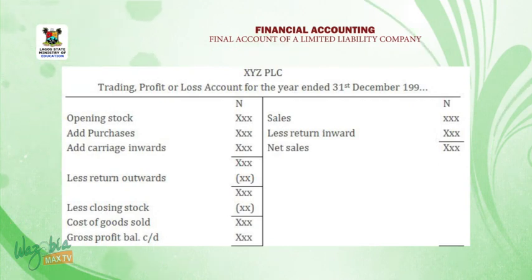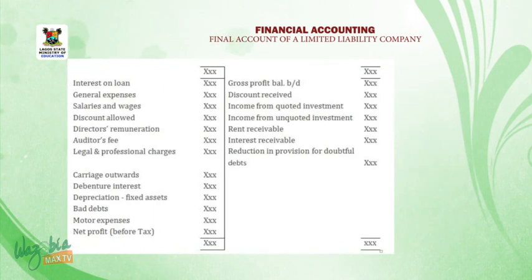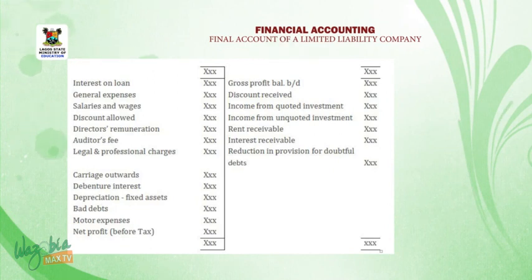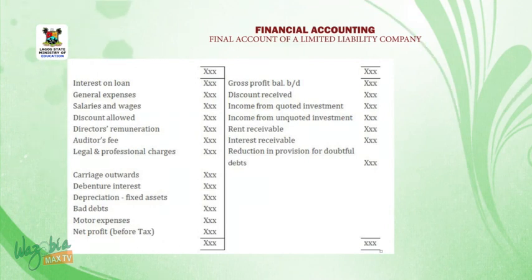Below it, we have our profit or loss account. On the debit side we have the following items: interest on loan, general expenses, salaries and wages, discount allowed, director's remuneration, auditor's fee, legal and professional charges, carriage outward, debenture interest, depreciation of fixed assets, bad debts, and mutual expenses. All these are debited to our profit or loss account.